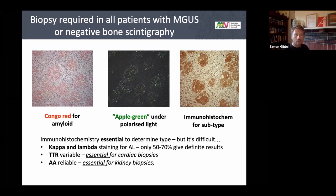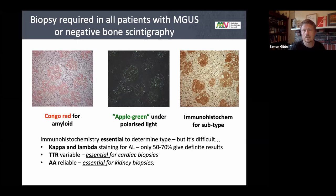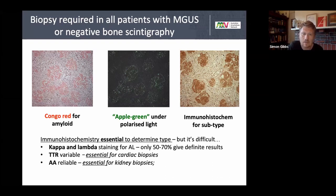The classic biopsy stain is Congo red, which shows a salmon-pink appearance in enlarged glomeruli that is apple-green birefringent under polarized light. Immunohistochemistry or immunofluorescence is then needed to determine whether it is AL or TTR type. It is essential to do kappa and lambda staining on all biopsies to look for AL, and cardiac biopsies must have transthyretin staining — if your lab doesn't do it, send it to one that does.